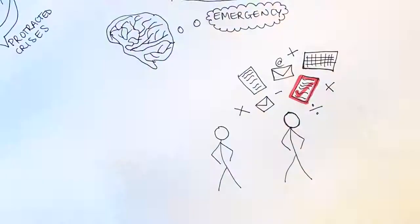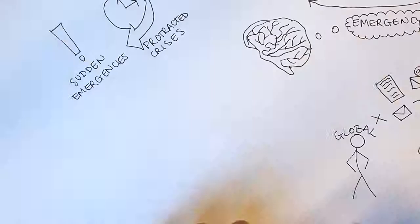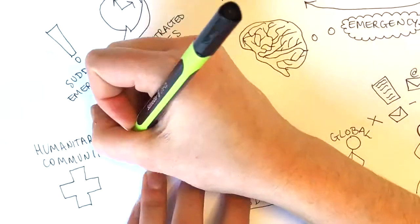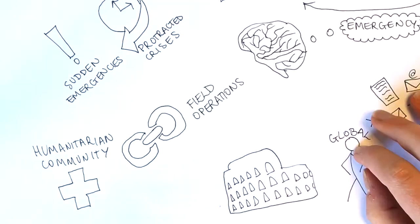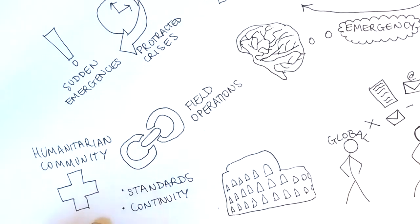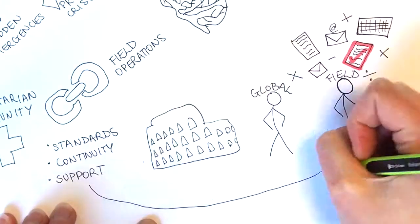Global Logistics Cluster IM officers mostly work from headquarters in Rome. They form a communications link between field operations and the humanitarian community. Global IM officers make sure standards and continuity of operations are maintained and also support IM officers in the field.